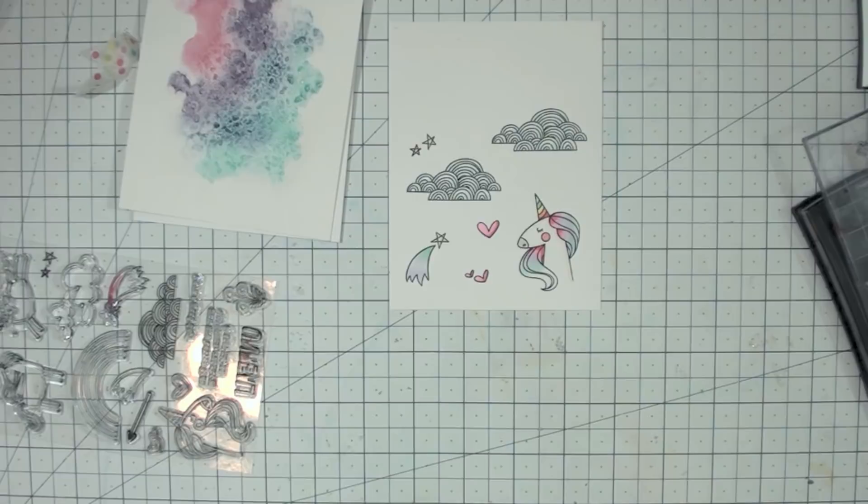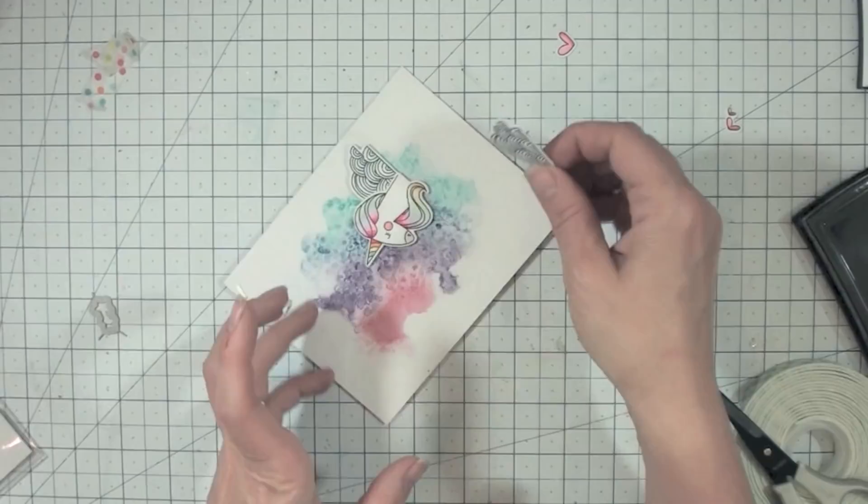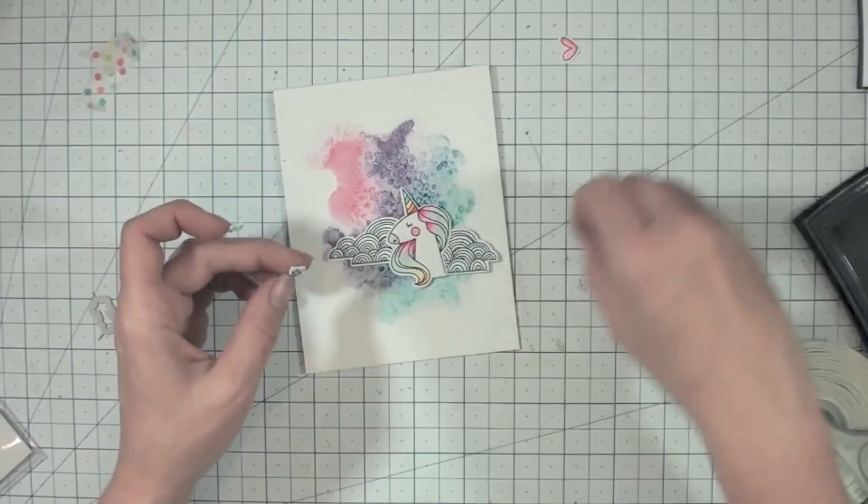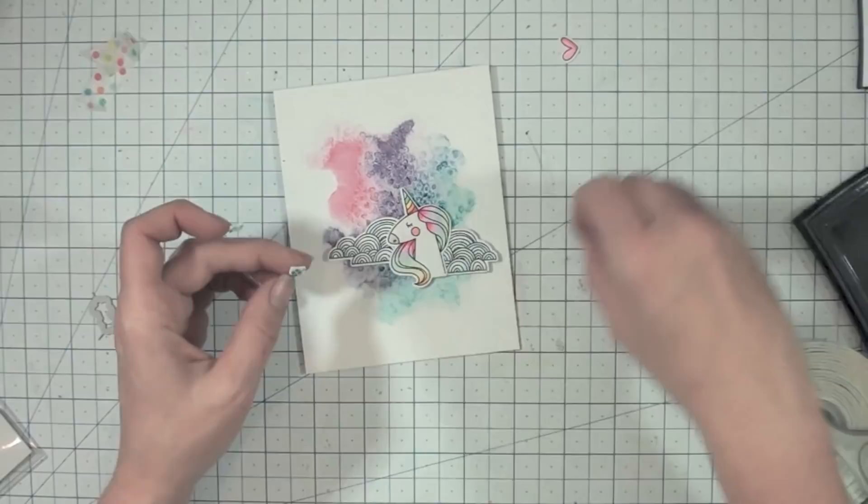And once I've got them colored in, I can die cut them out and then I'm ready to go ahead and assemble them onto my card. Now I'm just gonna pop them up on some dimensional foam here. And then once I have everything set in place, I'm gonna go ahead and add a sentiment.